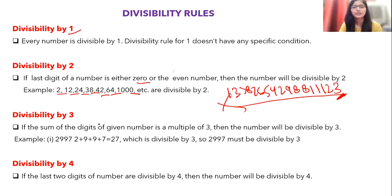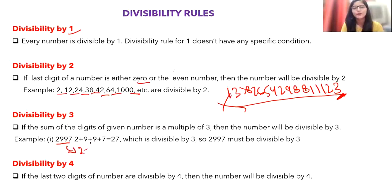For example, take 2997. Sum the digits: 2 + 9 + 9 + 7 = 27. Since 27 is divisible by 3, we conclude 2997 is divisible by 3. These small tips can save a lot of time — instead of manually dividing, you just sum the digits and instantly know the answer.